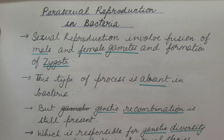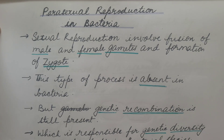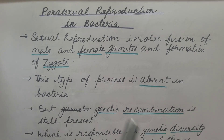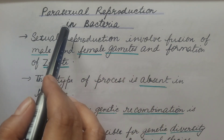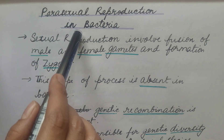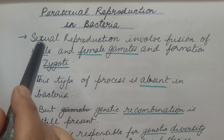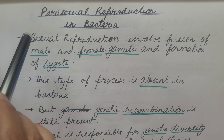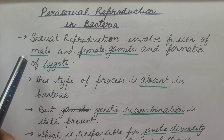Hello friends, we are discussing reproduction in bacteria. We have seen that it occurs by two methods: asexual reproduction and parasexual reproduction. We have already discussed asexual reproduction in the previous video. Today we are going to discuss about parasexual reproduction in bacteria. Many places, this parasexual reproduction is mentioned as sexual reproduction, but actually it is not sexual reproduction.